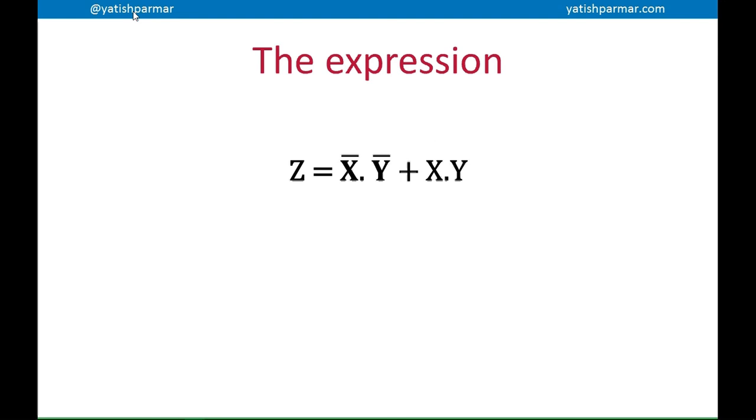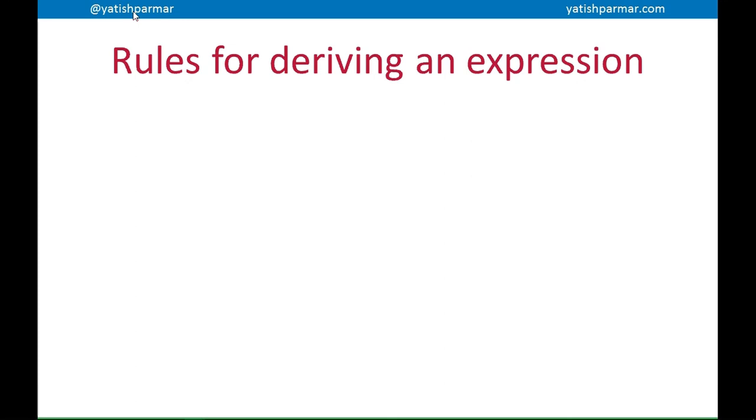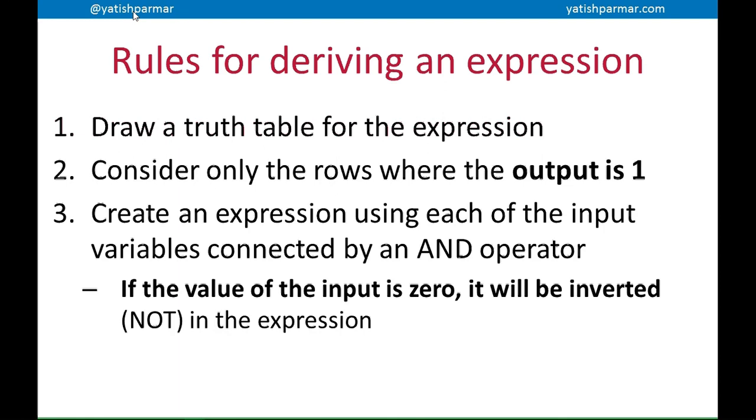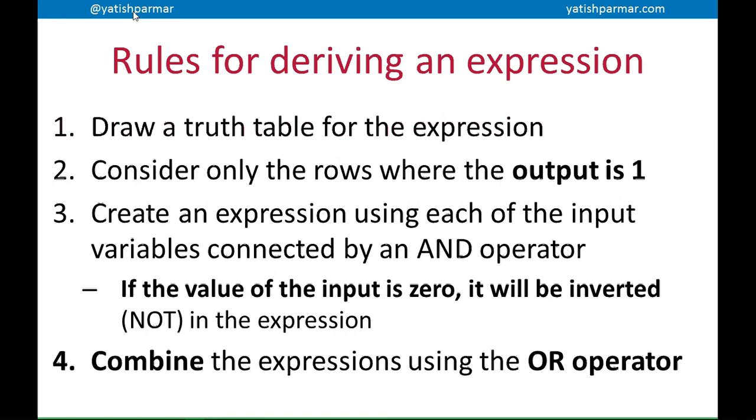So that's basically deriving an expression using a truth table. So the rules for deriving an expression basically are: first of all, you draw a truth table for the expression, the basic one. You expand it and then consider only the rows where the output is 1. You draw a loop around the, circle around the 1 values. And you can basically then create an AND operation using each of the input values. Remember that if the value of the input is 0, you need to invert it in your expression, so you need to turn it into a NOT, like we did NOT X and NOT Y in the previous example. And then finally, you combine all the individual expressions for each row together using an OR operator.